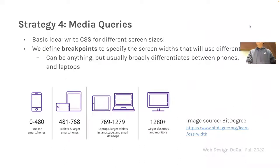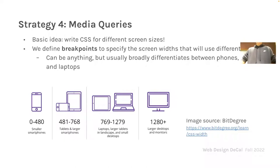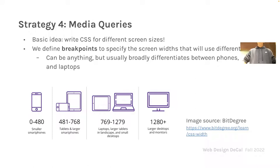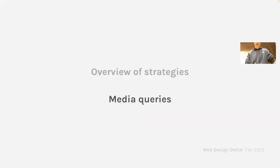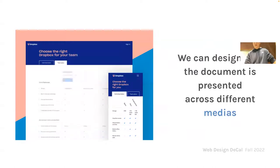Now I'm going to dive into a really cool CSS property called media queries. This allows you to define specific CSS properties for different screen sizes, so your website could look completely different on a mobile screen. You could essentially have a desktop version and a mobile version of your website using media queries.